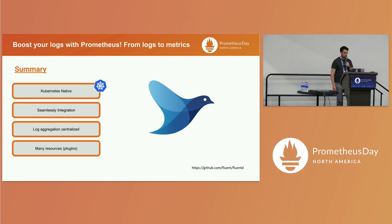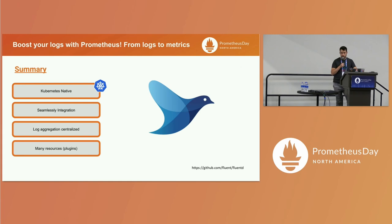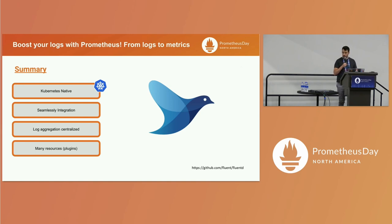To summarize FluentD: it's Kubernetes native and very simple to deploy. We have a Helm chart with values to configure for our clusters. We deploy it as a DaemonSet, so we have centralized log aggregation. The most useful thing about FluentD is its plugins - it has a great community providing tons of plugins that we can configure for several sources, return formats, or filters.